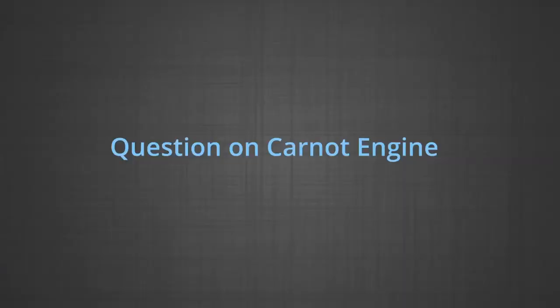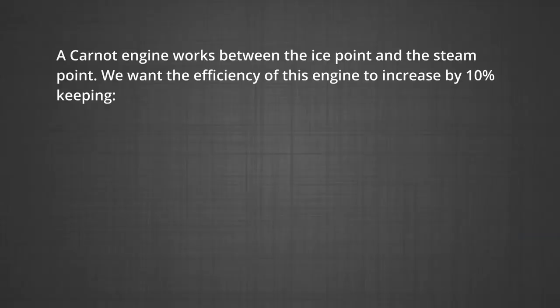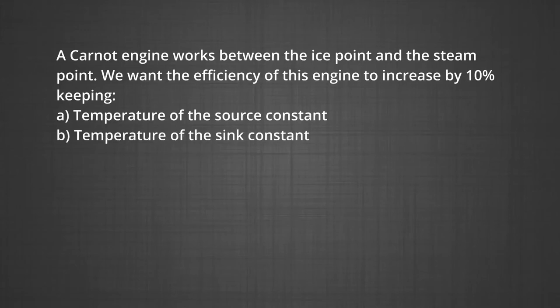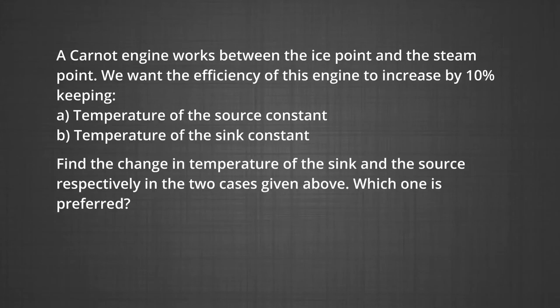The next question is based on a Carnot engine. A Carnot engine works between the ice point and the steam point. We want its efficiency to increase by 10%: first keeping the source temperature constant, then keeping the sink temperature constant. Find the change in temperature of the sink and source respectively, and determine which case is preferred.